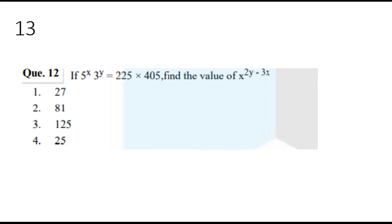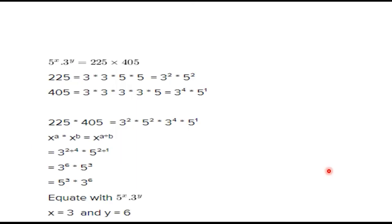If 5 raised to x times 3 raised to y equals 225 times 405, find the value of x raised to 2y times 3x. This is the question.